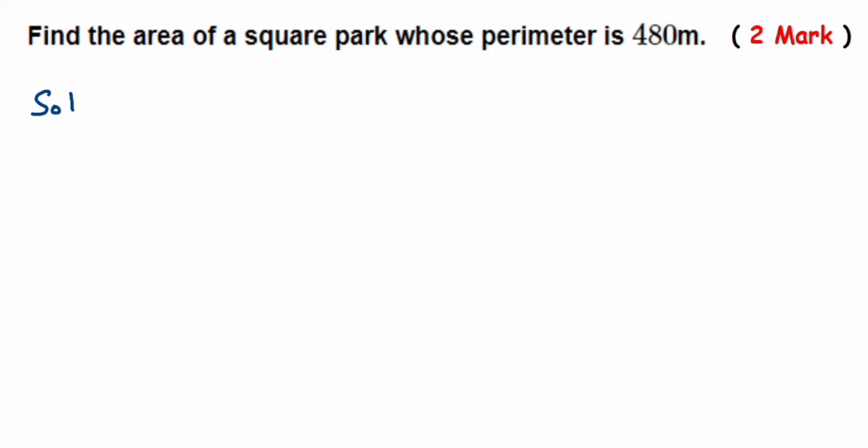So we're going to first find out the side of the square, and then we're going to find the area. So let's write down what we know from the question. They have given perimeter, it is 480 meters. So perimeter is equal to 480 meters.